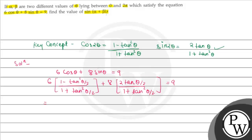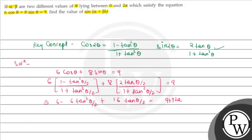After substituting and expanding, we get: 6 - 6tan²(θ/2) + 16tan(θ/2) = 9 + 9tan²(θ/2). Transferring all terms to one side implies a simplified equation.